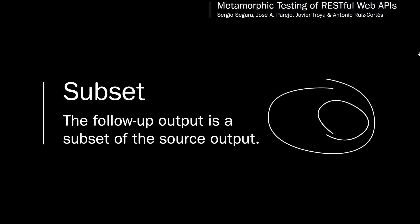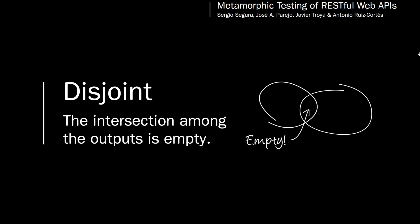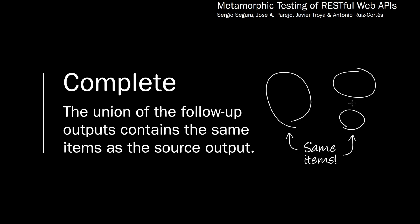Subset: a relation where the follow-up output is a subset of the source output. Disjoint: a relation where the intersection among the outputs is empty — that is, the outputs can have no item in common. Complete: a relation where the union of several follow-up outputs contains the same items as the source output.